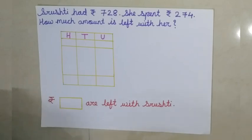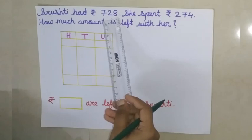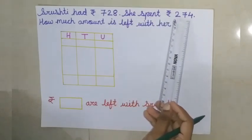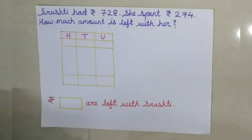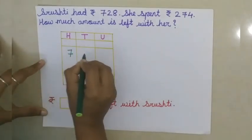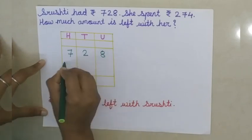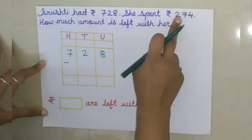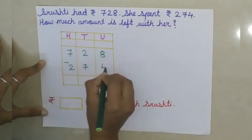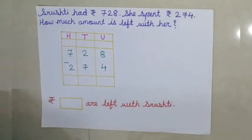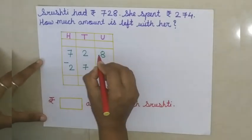See here, Shrushti had rupees 728. She spent rupees 274. Now, see how much money Shrushti had. She had 728 rupees. She spent 274. So now we have to find how much amount is left with her. So students, what we will do? We will start subtracting the numbers from the units place.